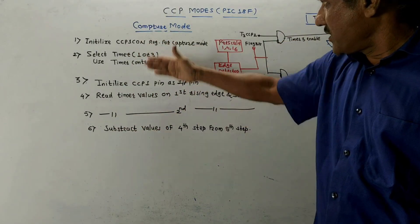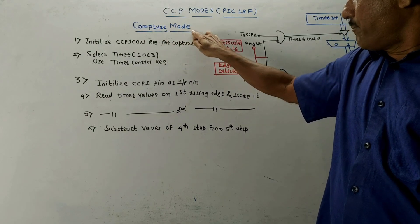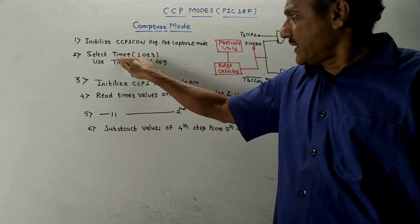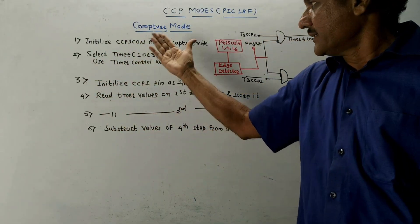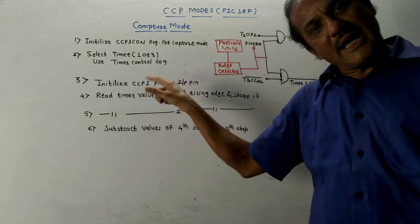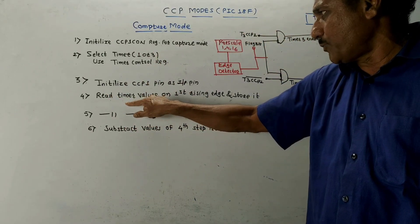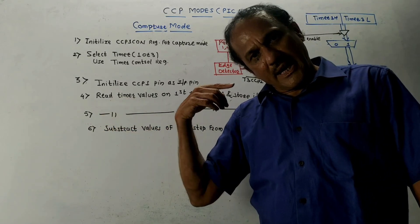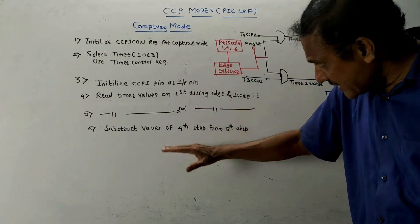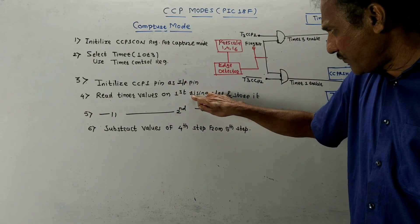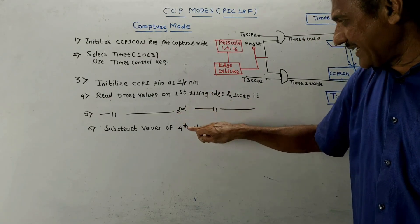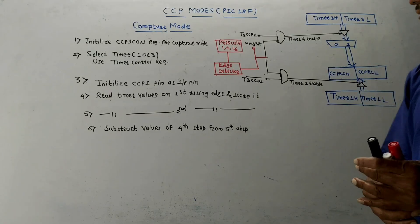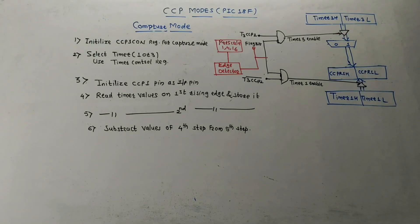Whenever an event is captured, similar to compare mode, a particular flag is set. The steps to write the program for capture mode are: first, initialize CCP1CON register bits for capture mode; second, select Timer 1 or 3 using the timer control register; third, initialize CCP1 pin as an input pin; then read timer values on the first rising edge and store them; read timer values on the second rising edge and store them; finally subtract the first values from the second to detect the event. That concludes capture mode of the PIC 18F microcontroller.